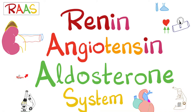Hey guys, it's Medicosis Perfectionist, where medicine makes perfect sense. Let's continue our labs playlist. In previous videos, we talked about beta-2-microglobulin, sputum sampling, uric acid in the blood and urine, acetylcholinesterase and anti-acetylcholine receptor antibodies, and lactate dehydrogenase and lactic acid. Today, we'll talk about a very important topic in medicine — the renin-angiotensin-aldosterone system.